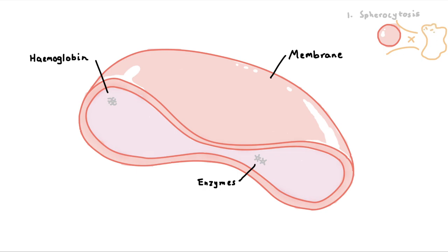Early treatment for this condition includes total splenectomy. Because the spleen is integral to our fight against bacterial infection, patients will then be required to take prophylactic oral antibiotics for the rest of their lives.